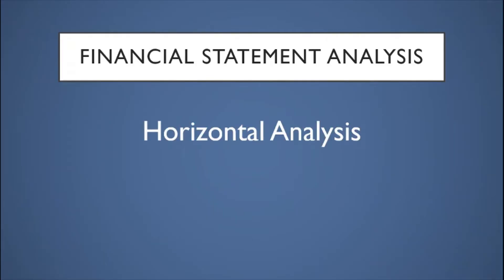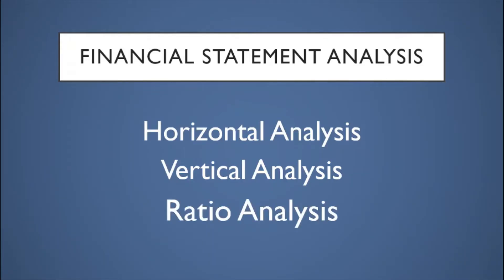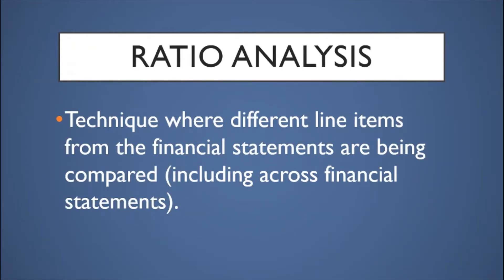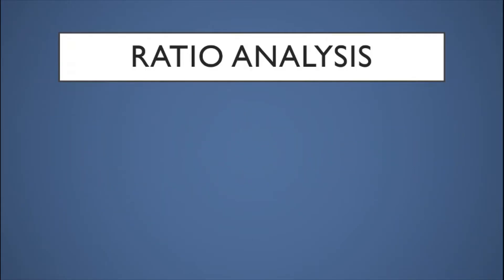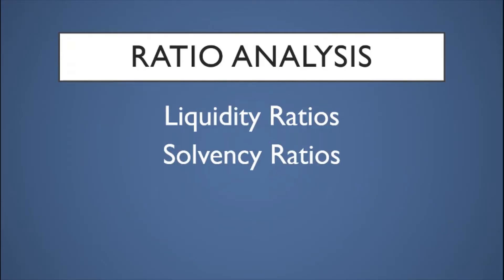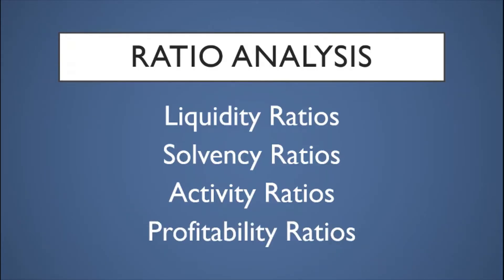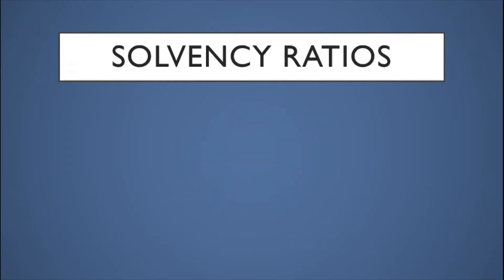Financial statement analysis can come in the form of horizontal analysis, vertical analysis, and ratio analysis. We are now in ratio analysis — a technique where different line items from the financial statements are compared, including items across financial statements such as balance sheet to income statement items. Ratio analysis can be classified into four types: liquidity ratios, solvency ratios, activity ratios, and profitability ratios.